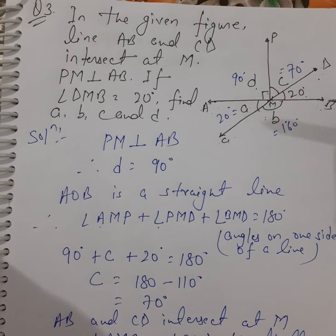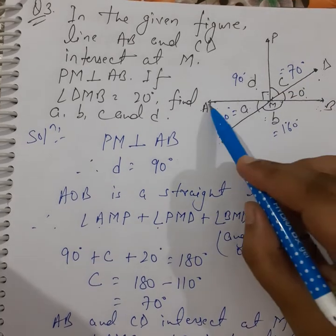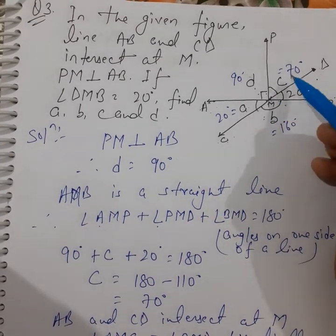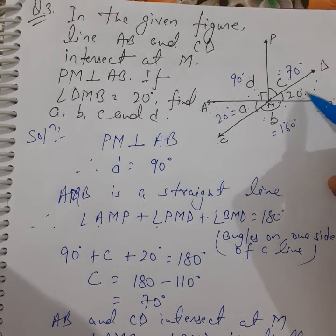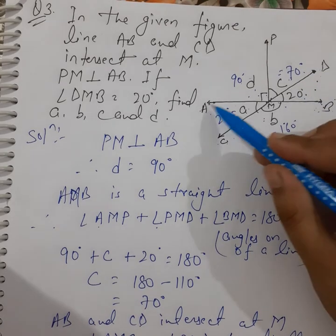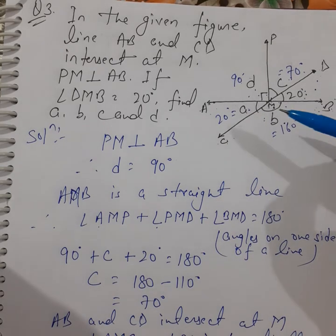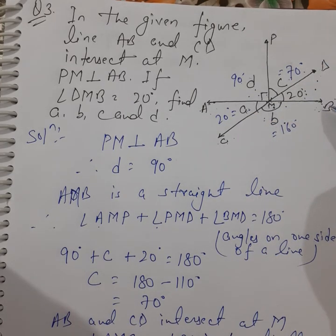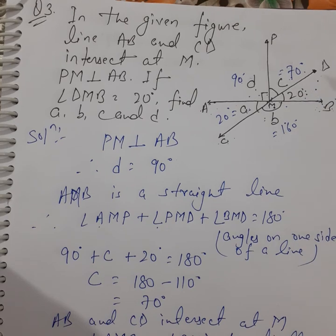To summarize: PM perpendicular to AB gives angle D = 90 degrees. Using angles on a straight line, C = 70 degrees. By vertically opposite angles, A = 20 degrees. By linear pair, B = 160 degrees.